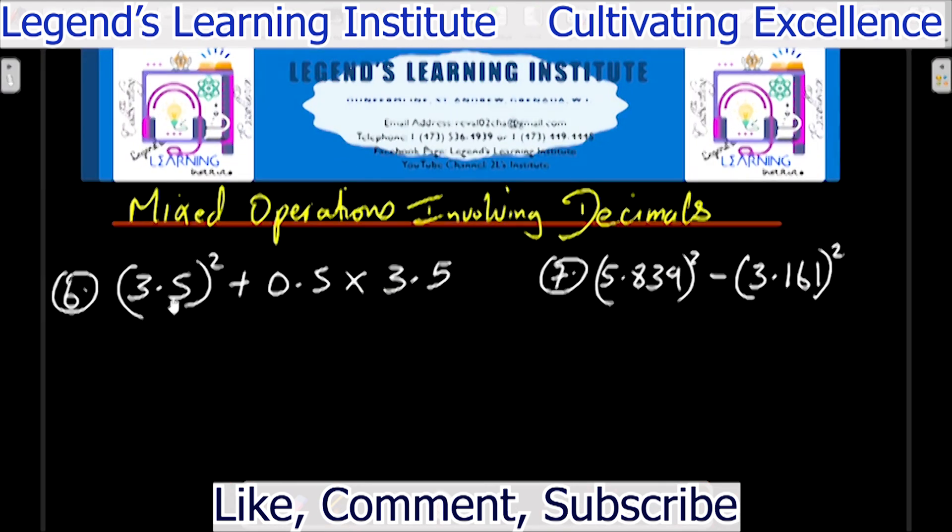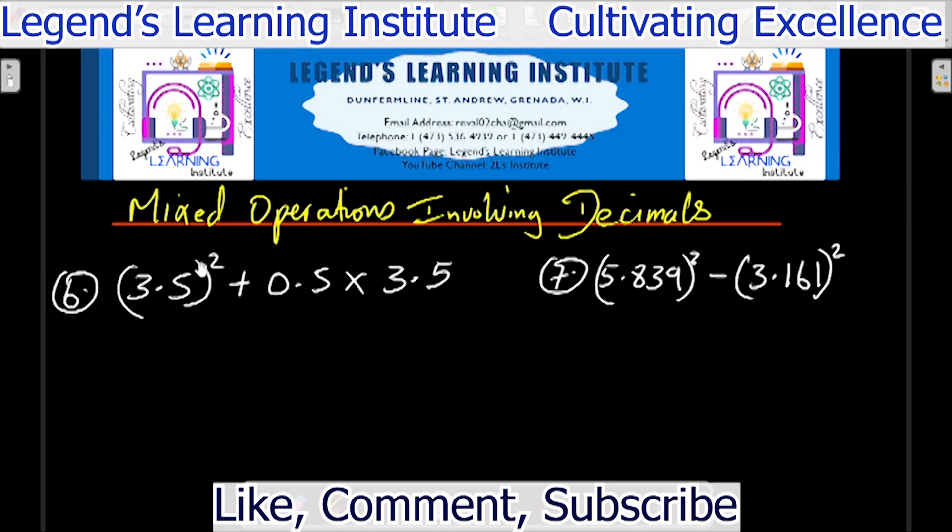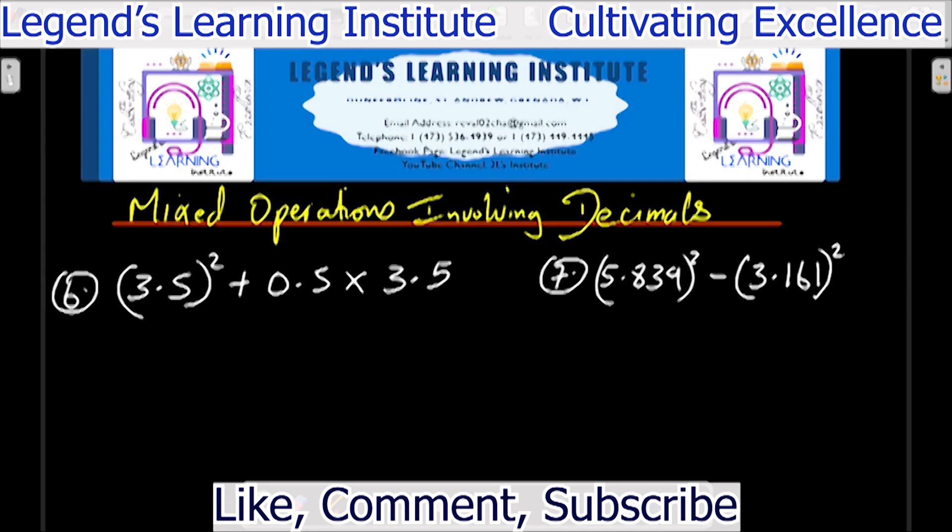Number 6, 3.5 squared plus 0.5 times 3.5. We have to square the 3.5 first because we have to work on the bracket as well as the order which is 2 or the index first before we do multiplication and addition. 3.5 squared that gives us 12.25 plus, we bring down everything else, 0.5 times 3.5.